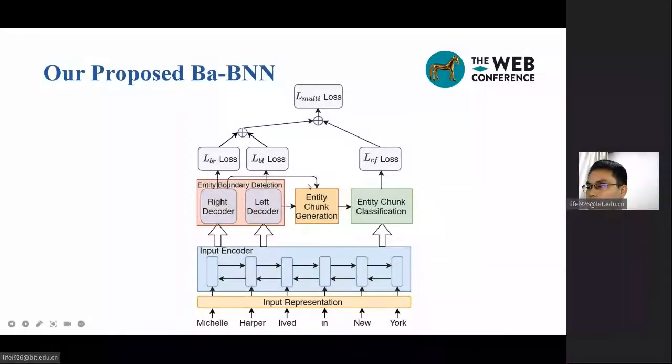Then, the entity trunk generation generates candidate entity trunks from the bidirectional decoders. Finally, the entity trunk classification classifies each candidate entity trunk into the corresponding entity type or non-entity with the boundary retraining strategy. Note that as entity boundary detection and entity trunk classification share the same encoder, we apply multi-task training when training the proposed Ba-BNN model.